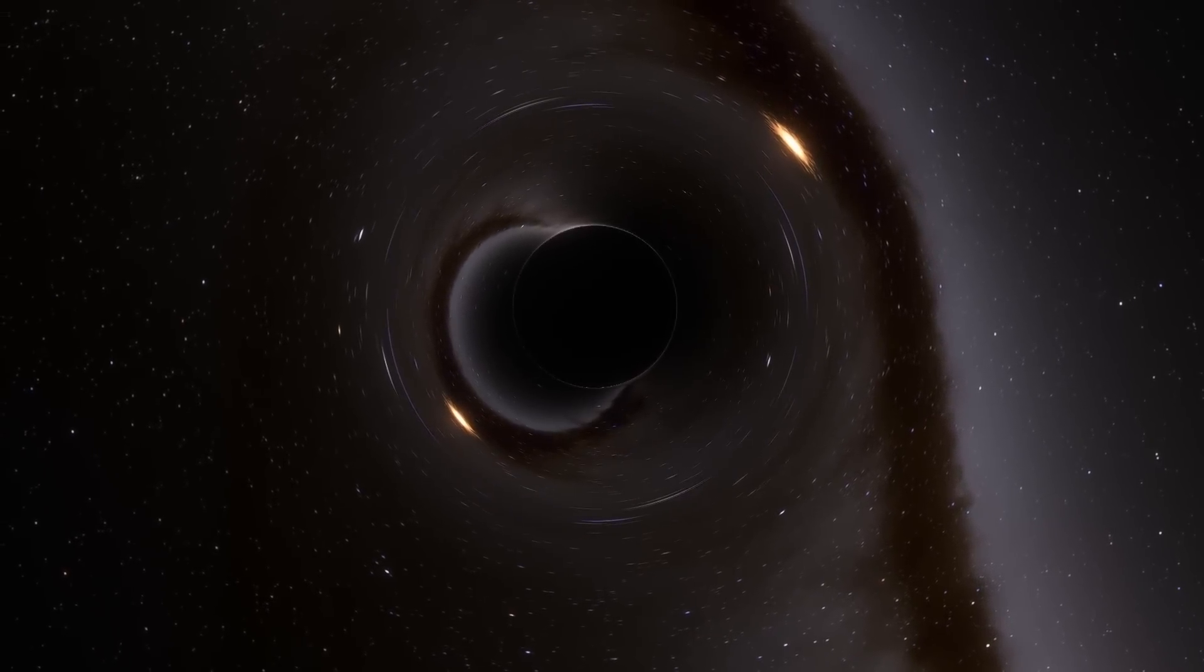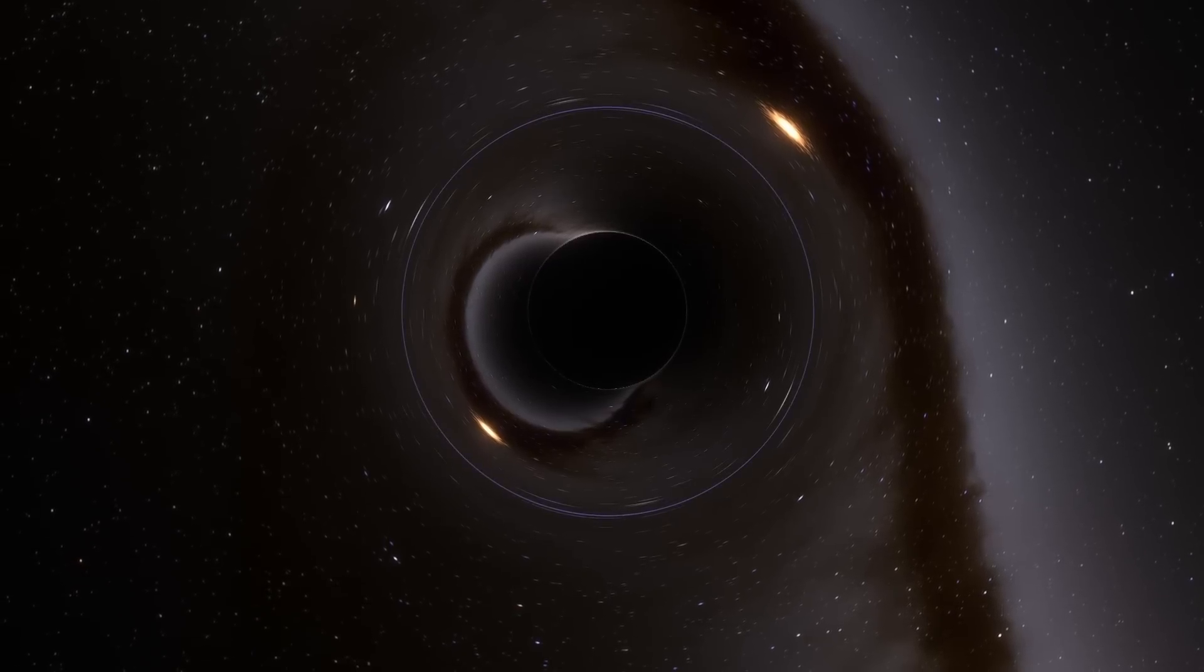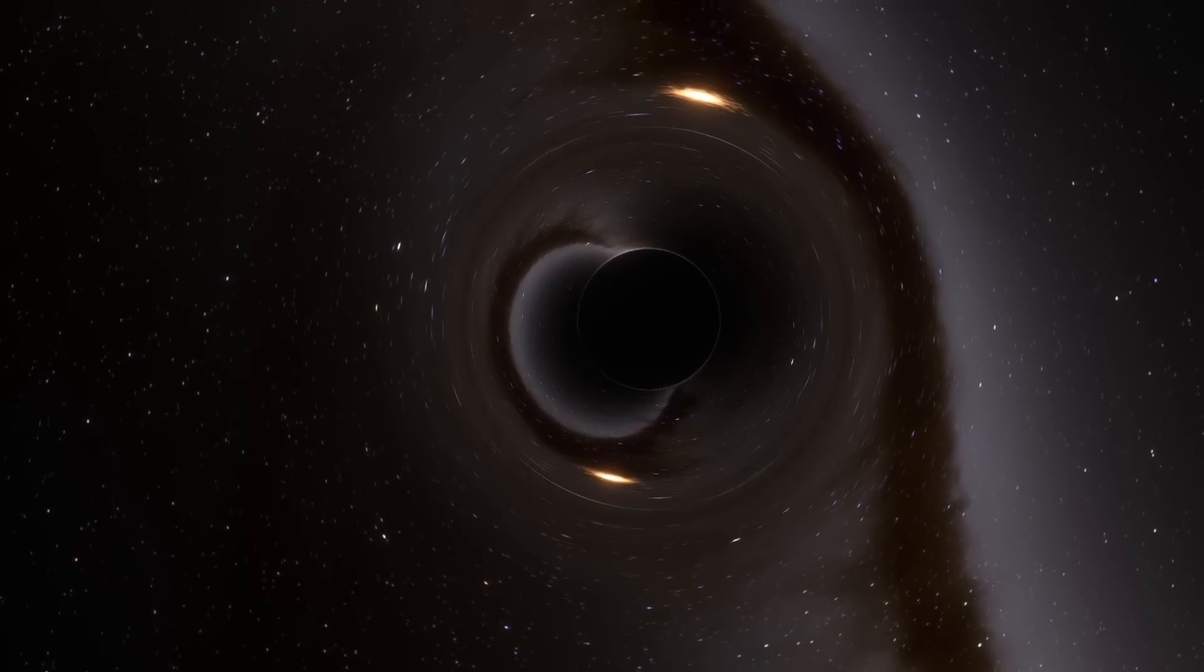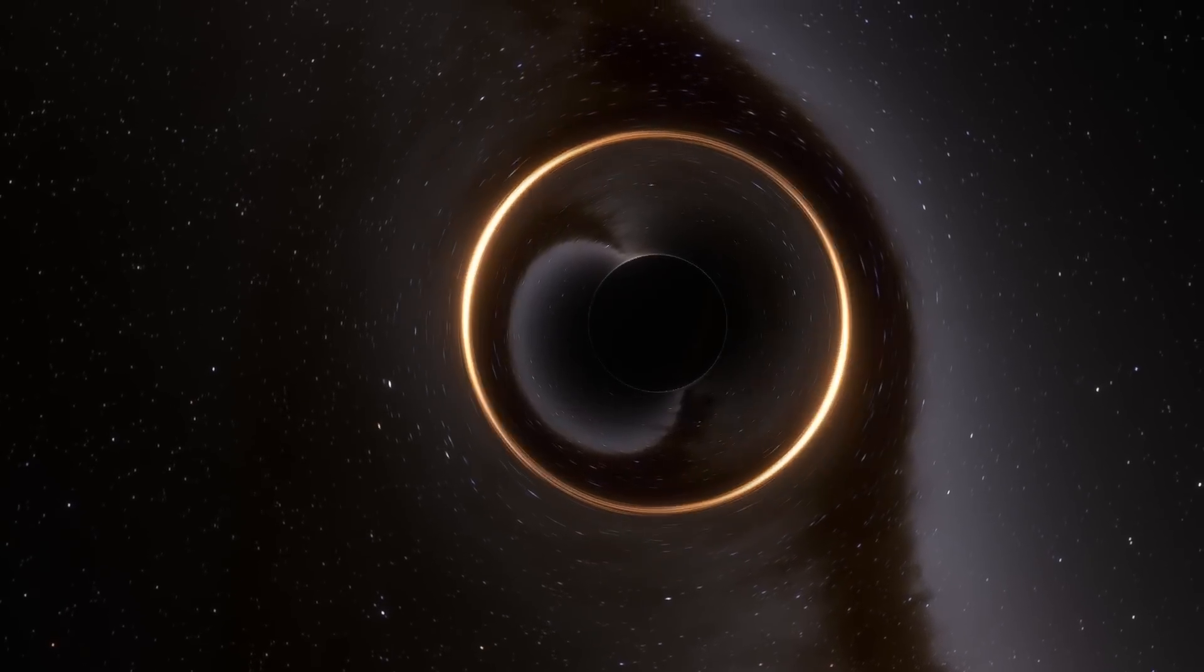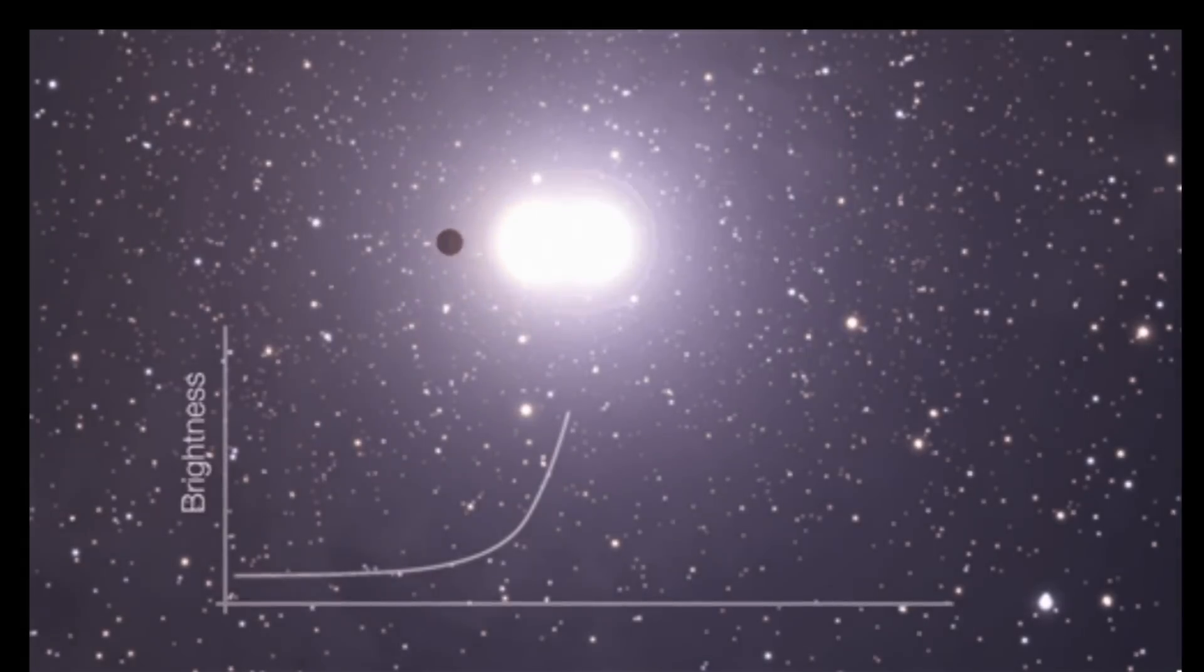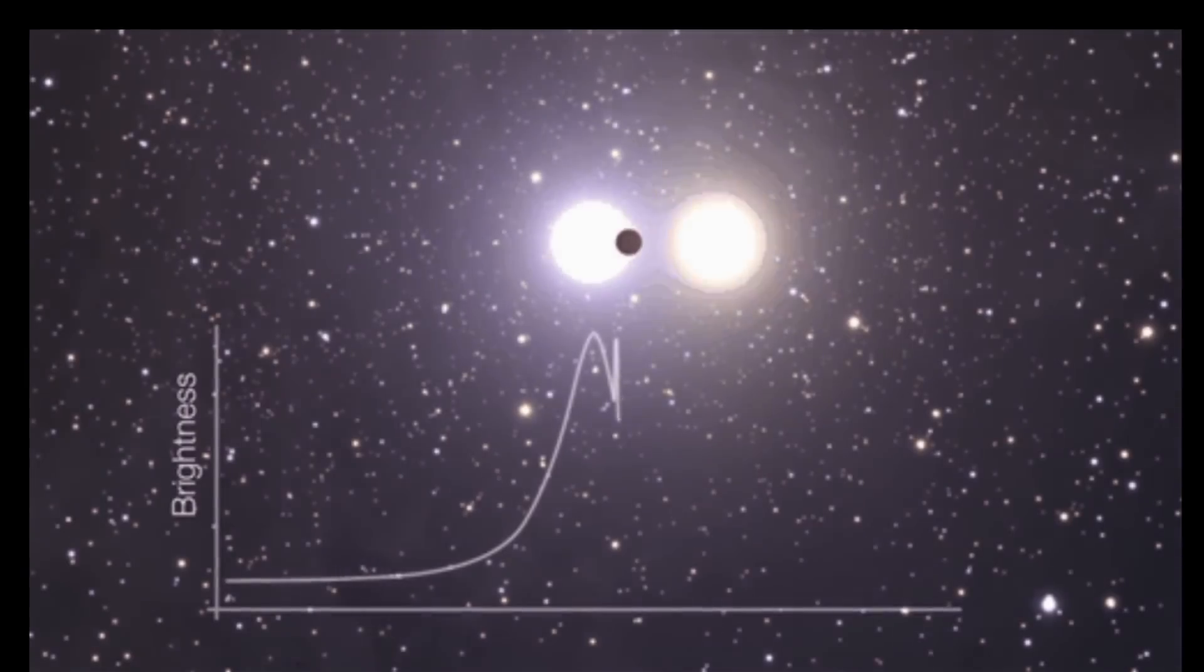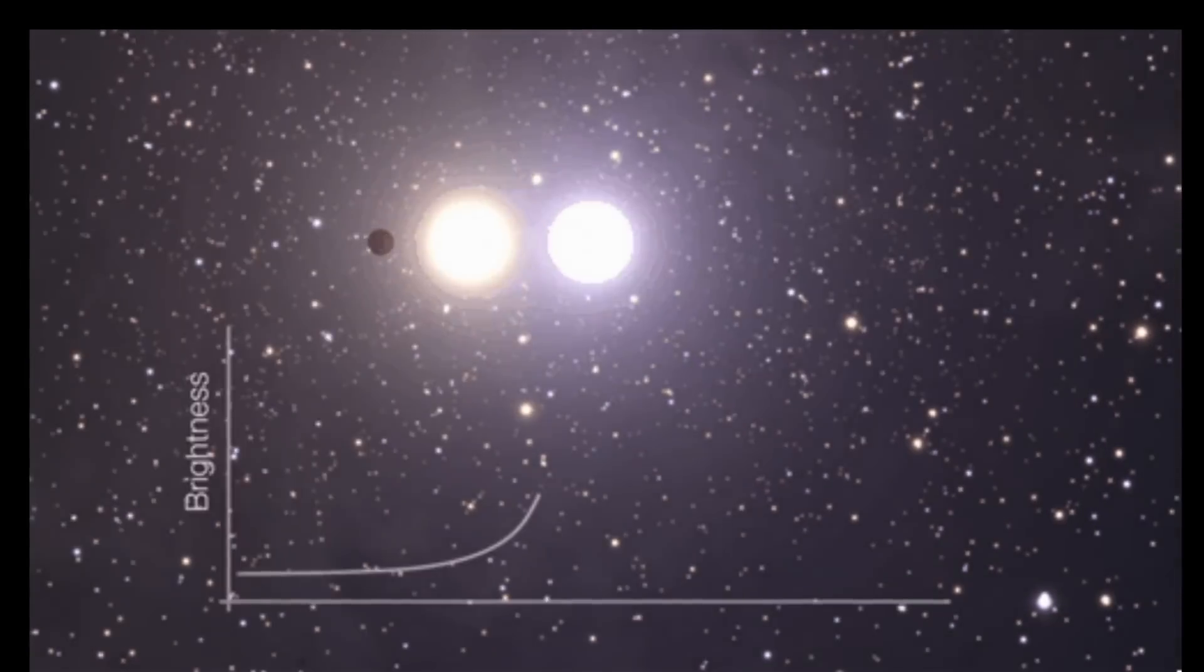The gravitational microlensing effect essentially changes the light coming from the background bright object in just the right way and can usually be seen as some kind of a dramatic change in the brightness of the background star.